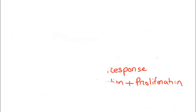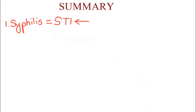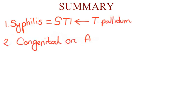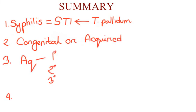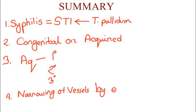To recap: syphilis is a sexually transmitted infection caused by Treponema pallidum. It may be congenital or acquired. Acquired syphilis has three stages: primary, secondary, and tertiary. It causes narrowing of vessels by proliferative endarteritis and a plasma cell-rich infiltrate.